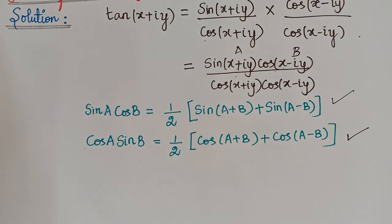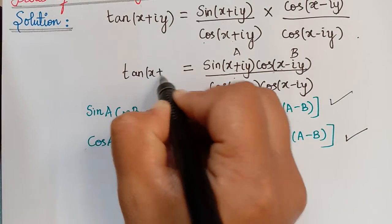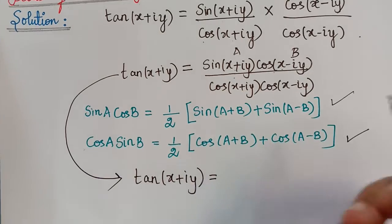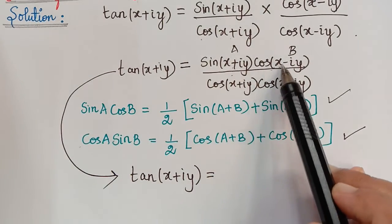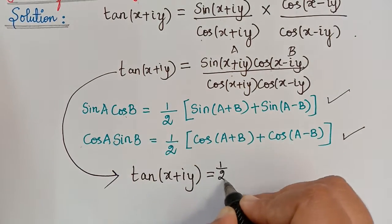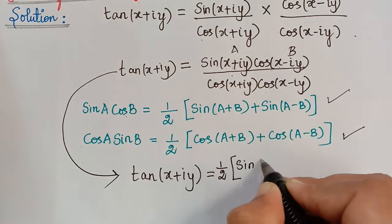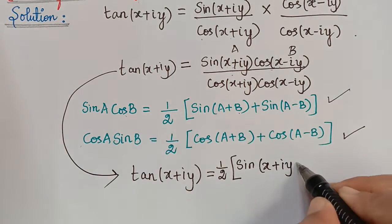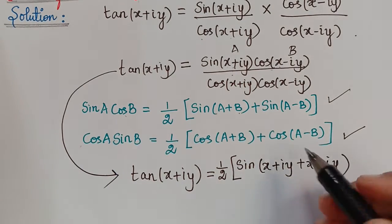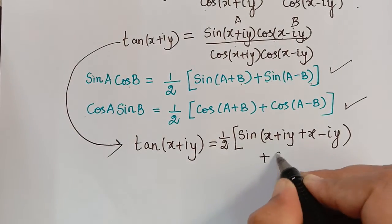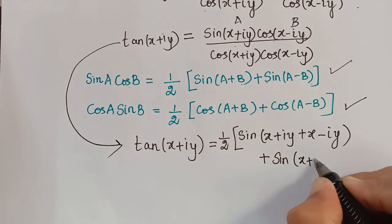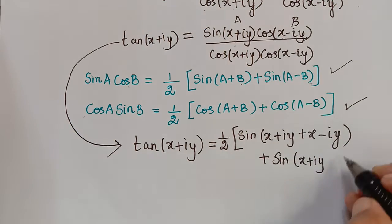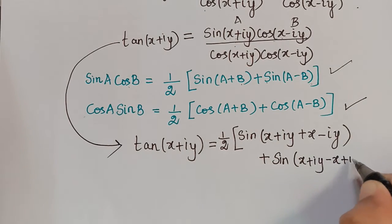Here, a = (x + iy) and b = (x - iy). For the numerator, sin(a)cos(b) equals one-half of [sin(a + b) + sin(a - b)]. So sin(a + b) gives sin[(x + iy) + (x - iy)], and sin(a - b) gives sin[(x + iy) - (x - iy)], which simplifies to sin[-x + iy + x + iy] — that is, sin(2iy) after cancellation, giving +iy + iy = i·2y.